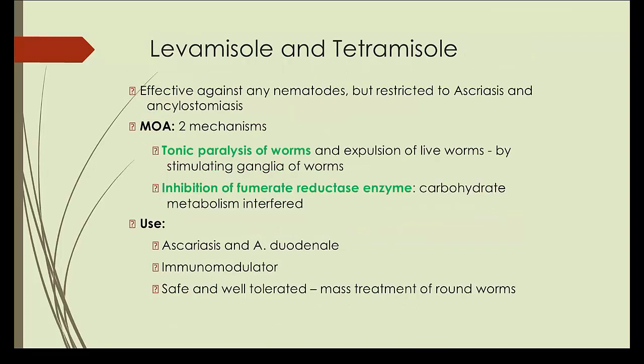Next is levamisole. It causes tonic paralysis of the worm and inhibition of the fumarate reductase system. However, it is mostly used nowadays as an immunomodulator — it restores depressed T-cell function. We will discuss immunomodulators in detail in the immunomodulator lecture. Levamisole can be used in vitiligo and has been tried to prevent recurrence of colorectal cancer. As an anti-helminthic, we do not use it nowadays because we have better drugs like albendazole.